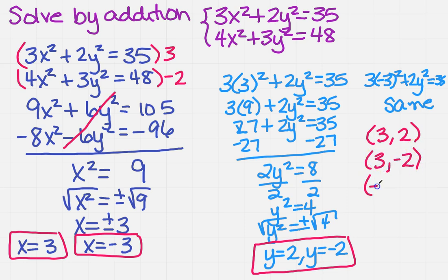And then if I have the minus 3, it's going to hang out with a positive 2. And the minus 3 is also going to hang out with the minus 2. So all four of those are going to be your solution set for this system of equations.